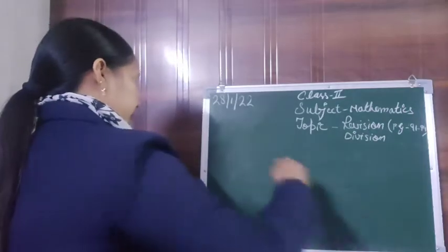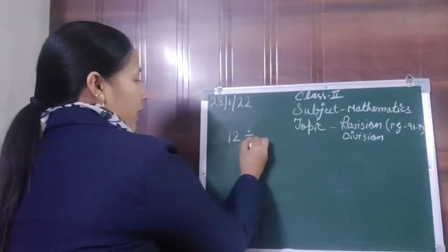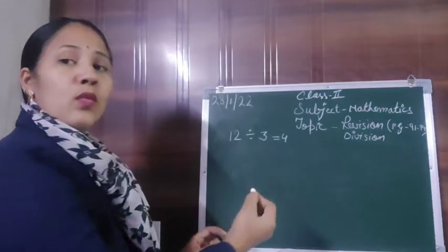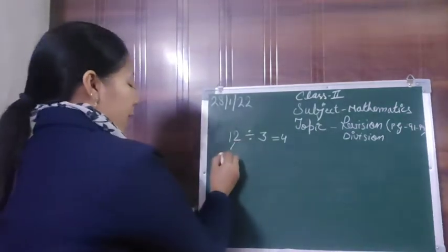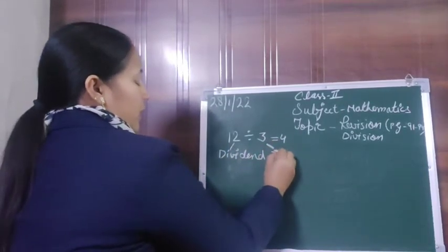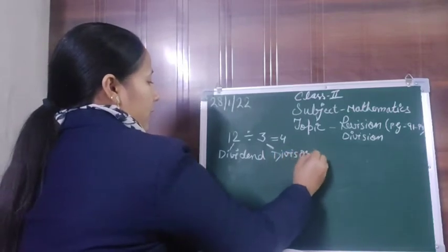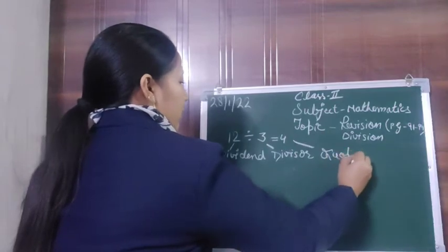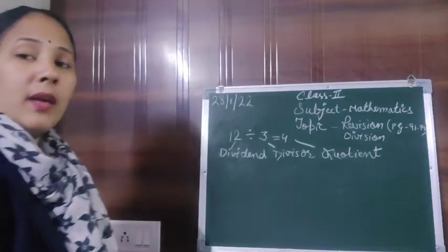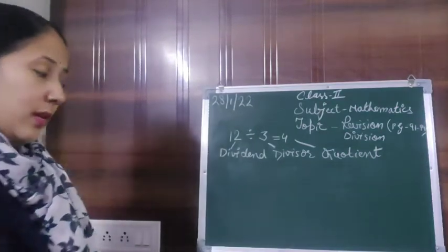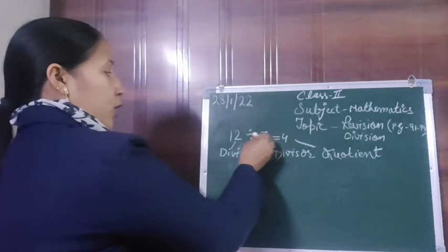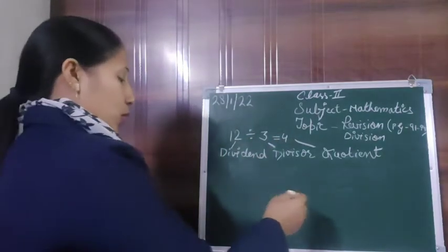Here we have 12 divided by 3. The answer we will get is 4. So here 12 is the dividend, 3 is the divisor, and 4 is the quotient. This is the simple way of division. In this we will count the table of 3 to get the answer 4.